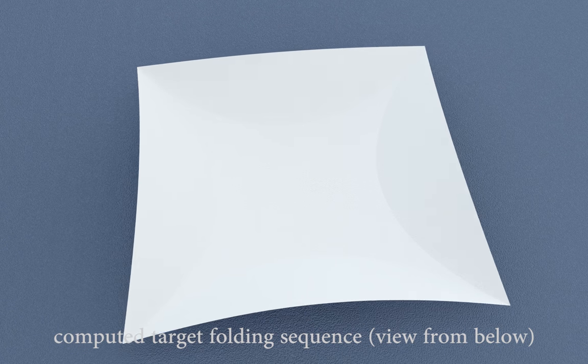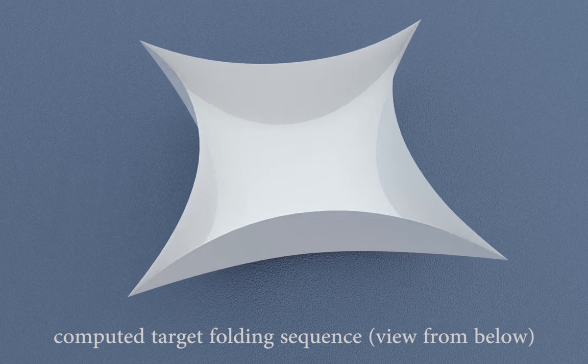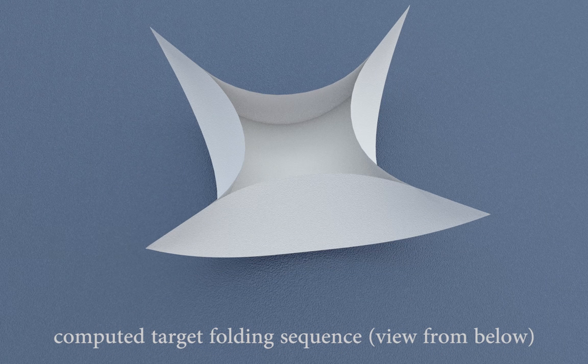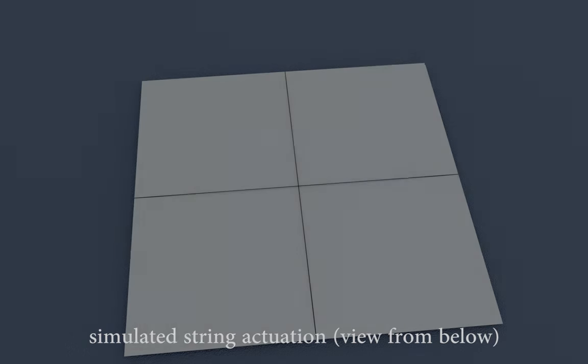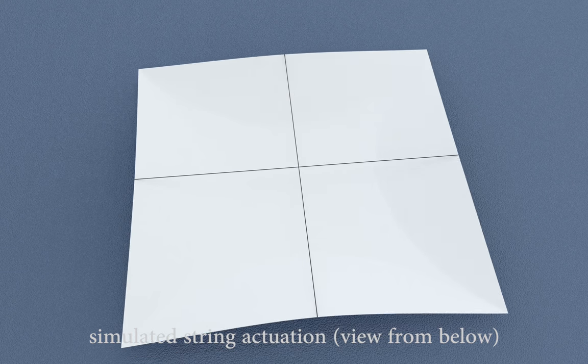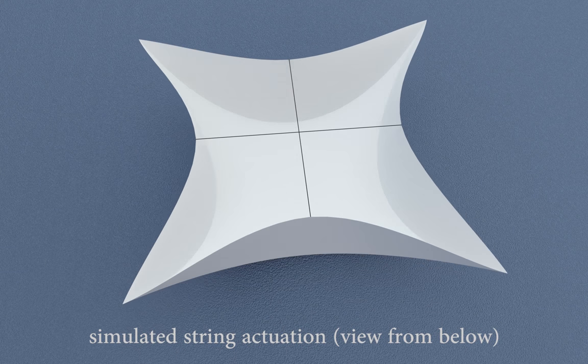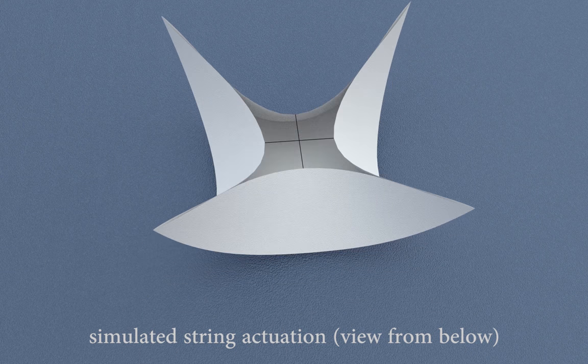We consider shapes defined by two-dimensional crease patterns that exhibit curved creases, and compute a sparse string graph on top of an input crease pattern such that a physical realization lifts the flat sheet to a corresponding three-dimensional shape when the threads are pulled.